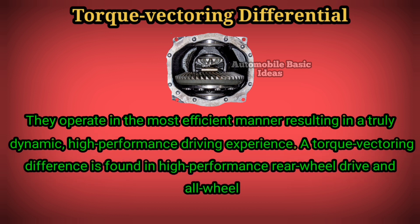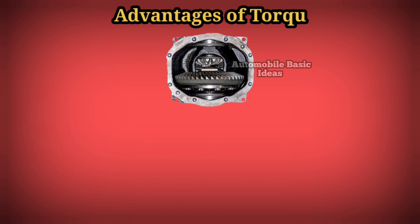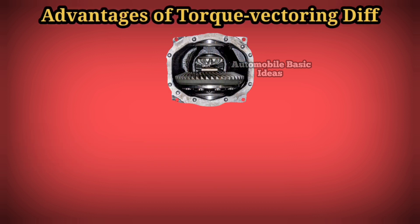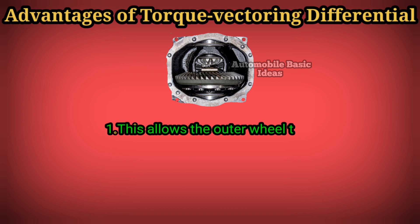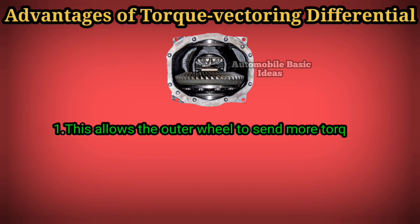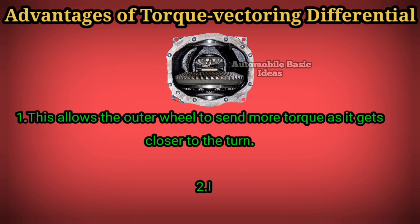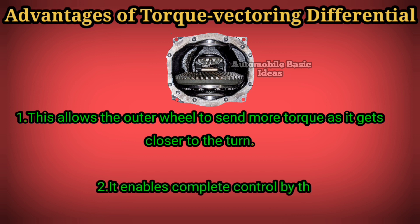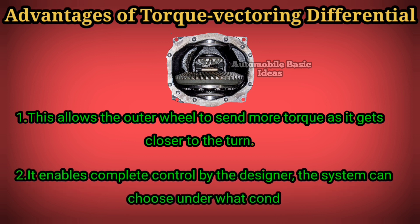A torque vectoring differential is found in high-performance rear-wheel drive and all-wheel drive vehicles. Advantages of a torque vectoring differential: one, it allows the outer wheel to send more torque as it gets closer to the turn; two, it enables complete control by the designer.